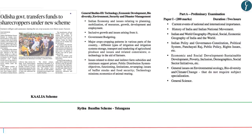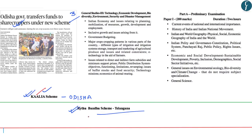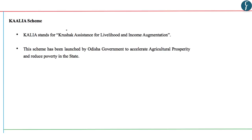The next news appears on page number 3: Odisha government transfers funds to sharecroppers under new scheme. This news is with reference to the KALIA scheme. The previous article also mentioned the KALIA scheme as well as the Raithubandhu scheme. KALIA scheme is a scheme of the government of Odisha, while the Raithubandhu scheme belongs to the state government of Telangana. This topic in your prelims examination forms a part of economic and social development, and in Mains gets covered under GS paper 3 under issues of Indian economy. KALIA stands for Krushak Assistance for Livelihood and Income Augmentation.